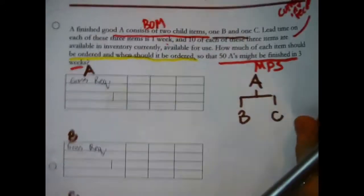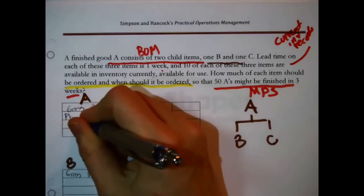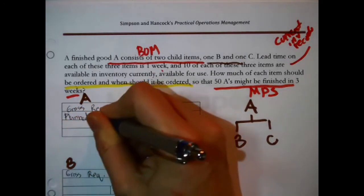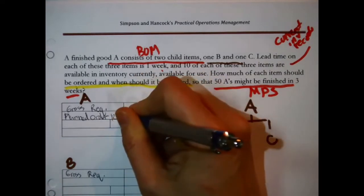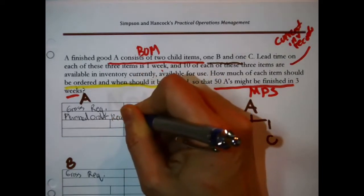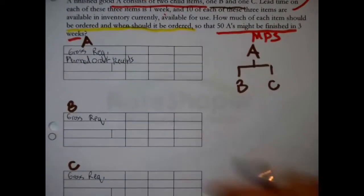The second line will be the planned order receipts. Well, I didn't really get it to fit in there. You know what I'm going to do? For B, this is P for planned, O for order. I'm going to abbreviate.